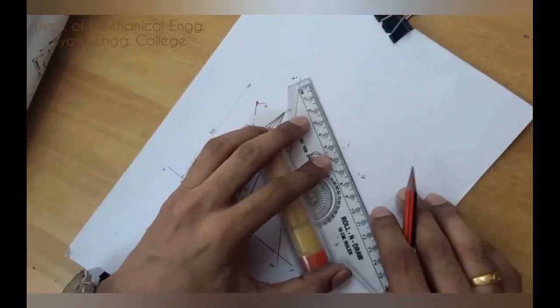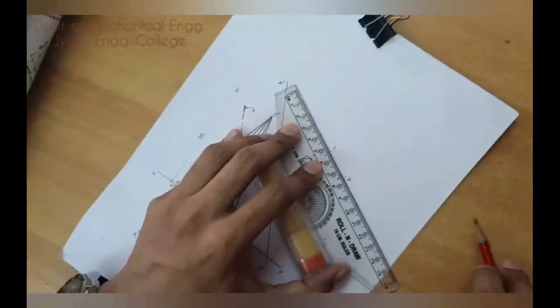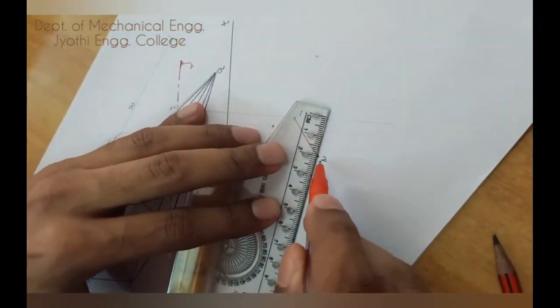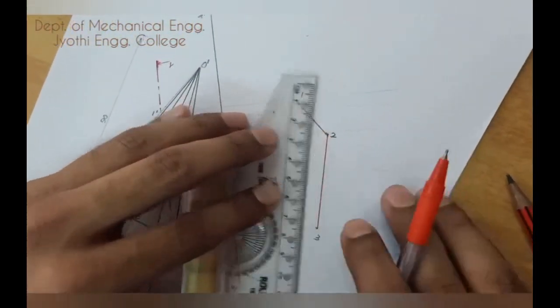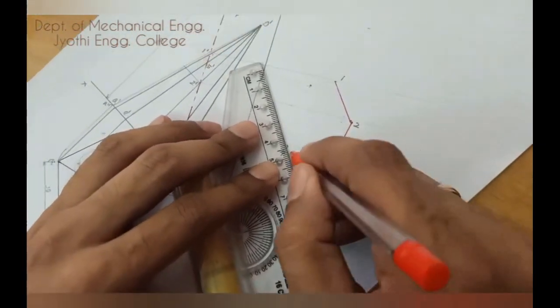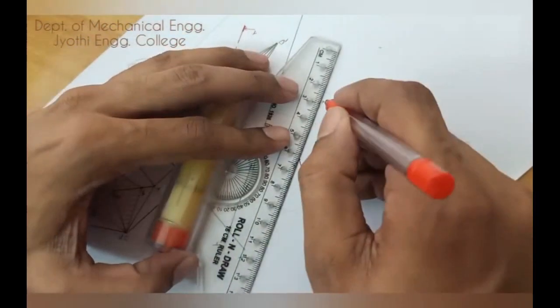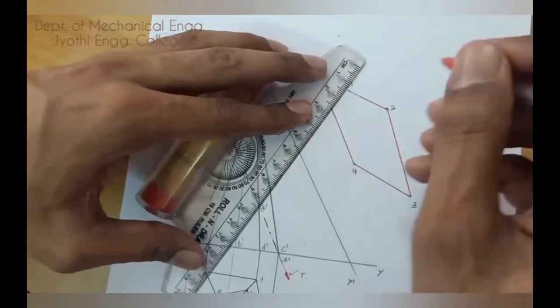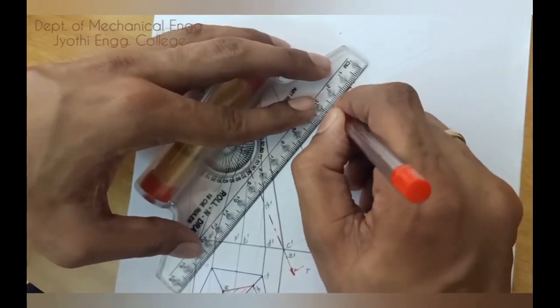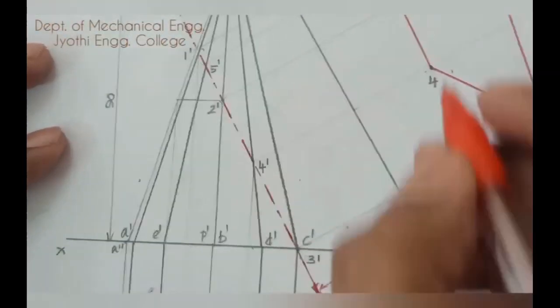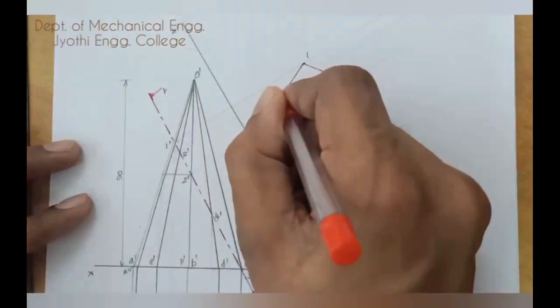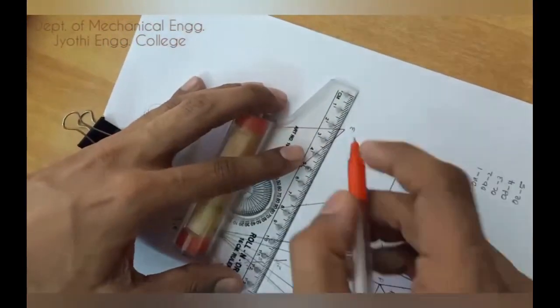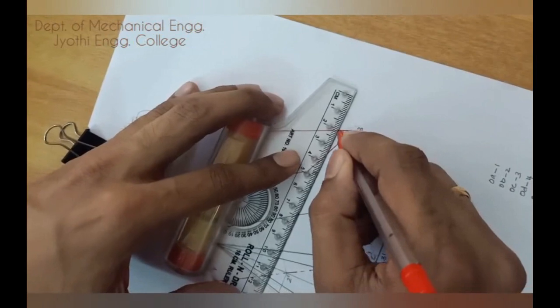Then you join as from 1 to 2, 2 to 3, 3 to 4, 4 to 5 and then 1. So, 1, 2, 3, 4 and the point 5. Now you can hatch in order to show the section as the figure.